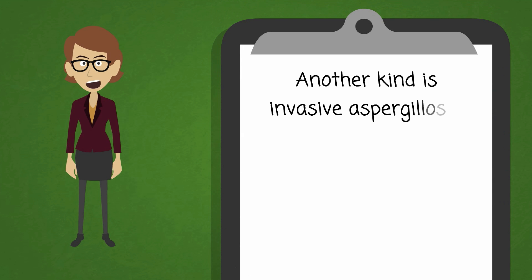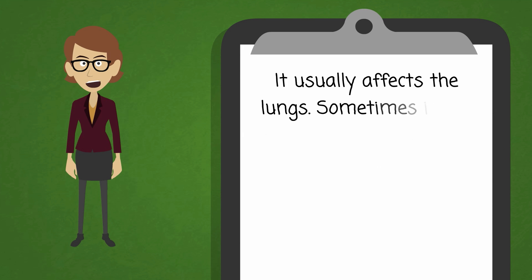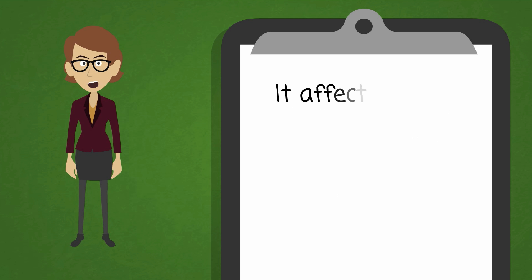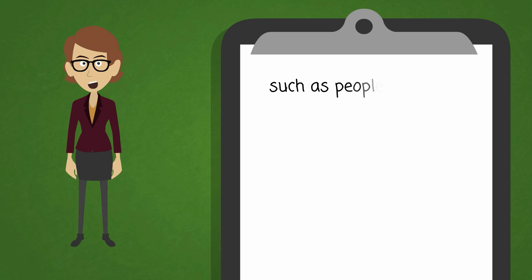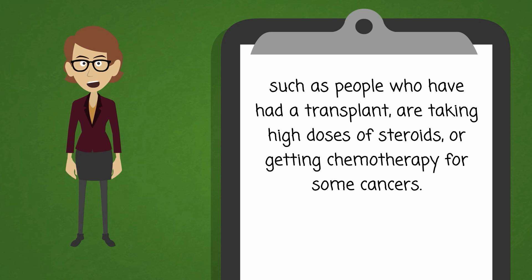Another kind is invasive aspergillosis, which damages tissues in the body. It usually affects the lungs, but sometimes it can also cause infection in other organs and spread throughout the body. It affects people who have immune system problems, such as people who have had a transplant, are taking high doses of steroids, or are getting chemotherapy for some cancers.